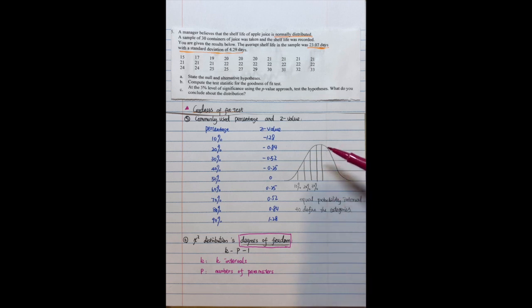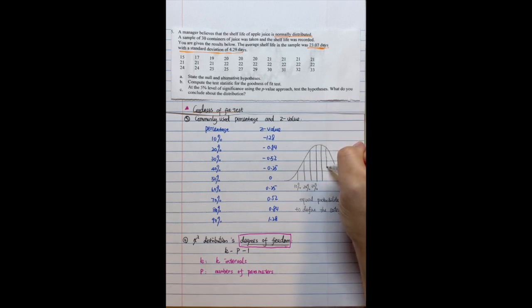So sometimes we will use maybe 10 intervals. Sometimes we will need to use maybe 5 intervals. And P here will be the number of the parameters.